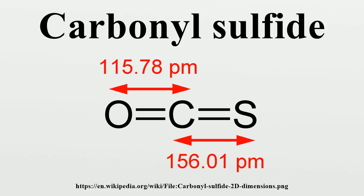Carbonyl sulfide is the most abundant sulfur compound naturally present in the atmosphere, at 0.5 plus or minus 0.05 ppb, because it is emitted from oceans, volcanoes, and deep sea vents.